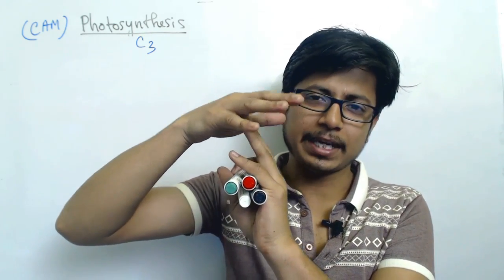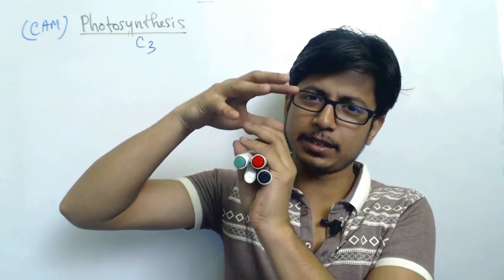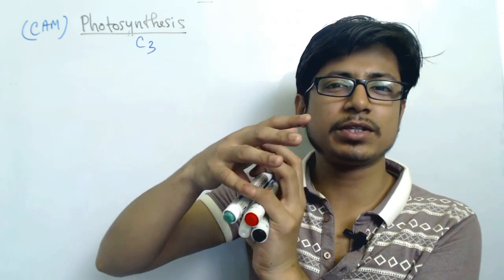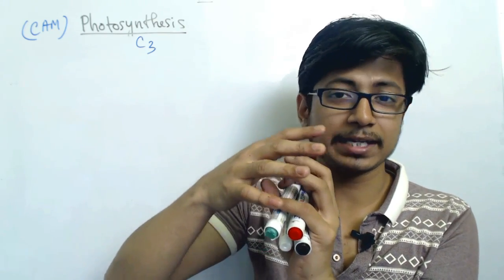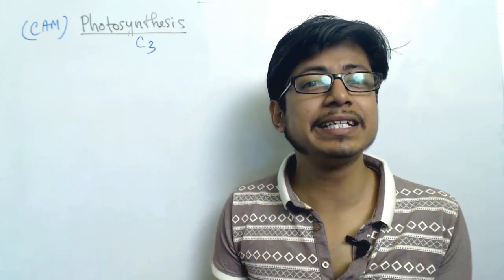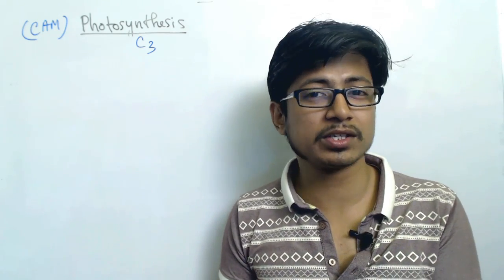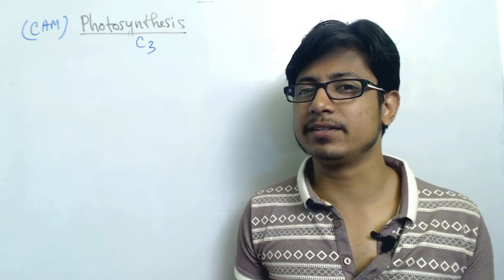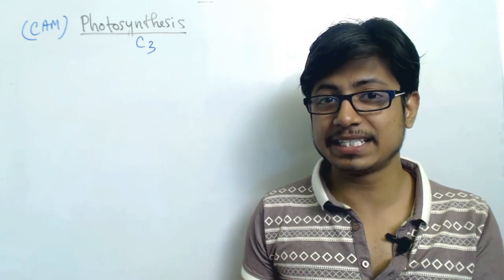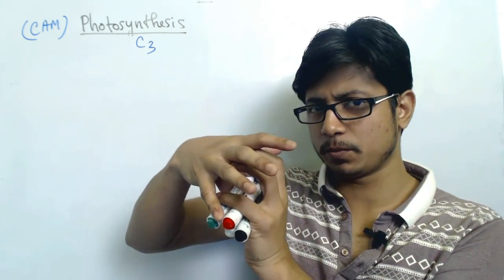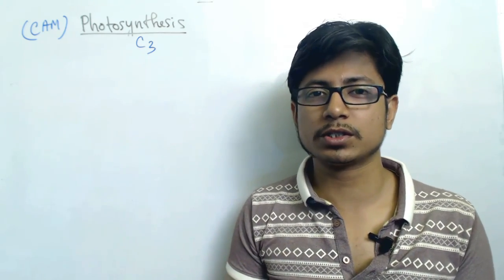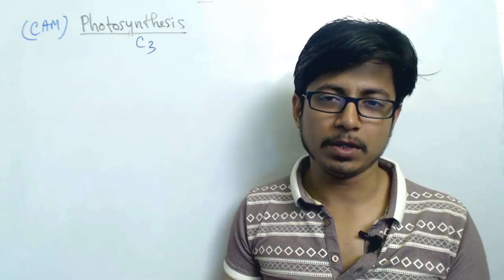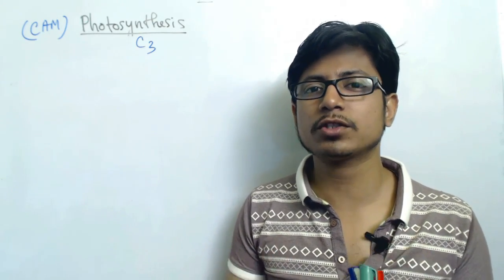In the leaves of plants there is a specific region of pores guided by different cells, and those pores are known as stomata. Whenever the stomata opens, it is the entry point for oxygen and carbon dioxide, and also the exit site for oxygen, carbon dioxide, and water. Since it is really dry in the daytime, if a plant opens the stomata it will cause a lot of water loss.